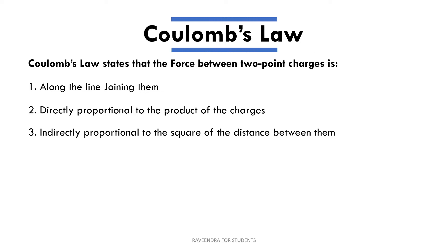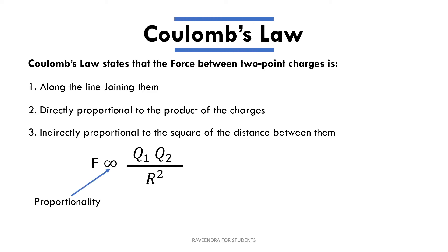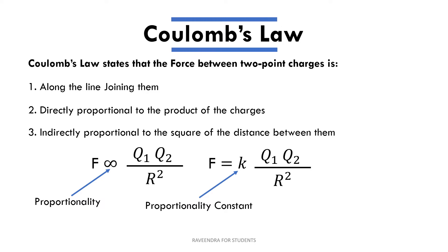If you put these statements in mathematical form: F is proportional to Q1 times Q2 divided by R squared. Here R squared is the square of the distance, Q1 Q2 is the product of the charges, and this symbol represents proportionality. To eliminate the proportionality, we write F equals some constant K, which is called the proportionality constant, giving F equals K times Q1 Q2 divided by R squared.